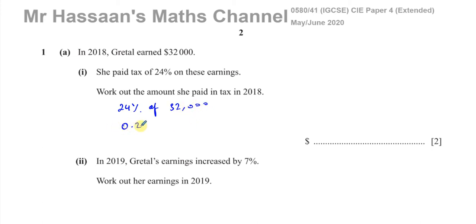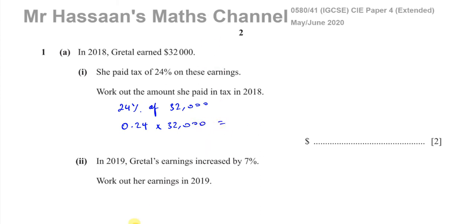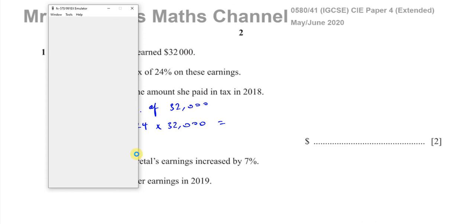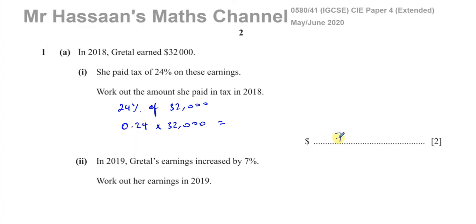You're going to write this as a decimal or a fraction: 0.24 times $32,000. So you have $32,000 times 0.24, which gives us $7,680. There's the answer to part A.